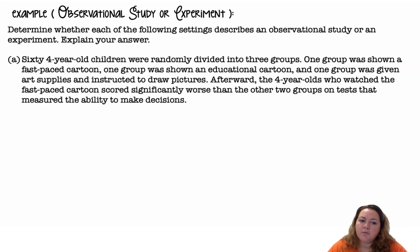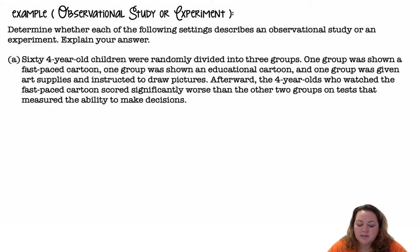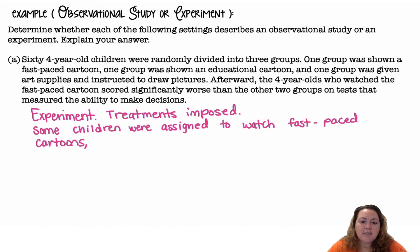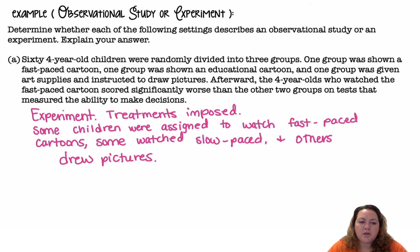Observational study or experiment — determine whether each of the following settings describes an observational study or an experiment. 60 four-year-old children were randomly divided into three groups: one group was shown a fast-paced cartoon, one group was shown an educational cartoon, and one group was given art supplies and instructed to draw pictures. Afterwards, the four-year-olds who watched the fast-paced cartoon scored significantly worse than the other two groups on tests that measured the ability to make decisions. This is an experiment — treatments were imposed. Some children were assigned to watch fast-paced cartoons, some watched educational cartoons, and others drew pictures, so it was an experiment because we assigned them to different treatments.